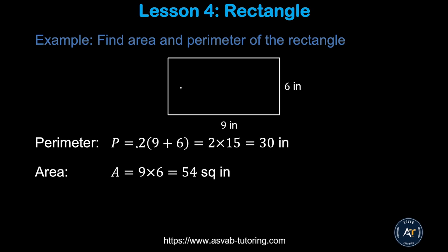Let's apply that formula to a problem. This rectangle has length equal to 9 and width equal to 6. Using the formula, perimeter equals 2 times (length plus width), so 9 plus 6 is 15, and 2 times 15 is 30 inches.